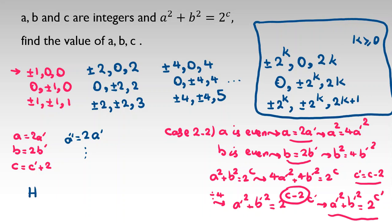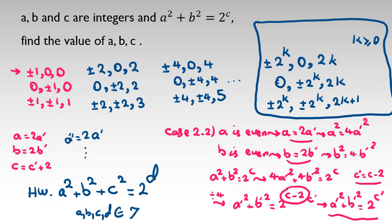We've solved the problem completely. As a homework problem: if a, b, c, d are integers and a squared plus b squared plus c squared equals two to the d, find all solutions — you can comment your answers below. Don't forget to subscribe, turn on the bell, and like the video. Send a message to my WhatsApp number in the description if you want to learn important ideas in each topic. Have a great day!